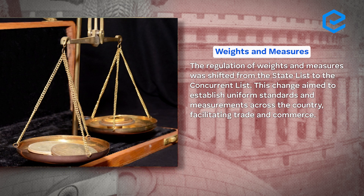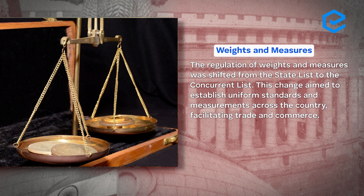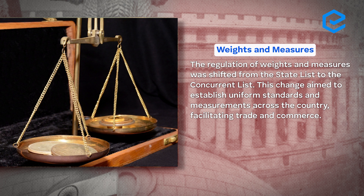Weights and measures: regulation of weights and measures was shifted from the state list to the concurrent list — again uniformity was needed. A useful rule of thumb: if you are confused whether a subject belongs to the state list, concurrent list, or central list — topics requiring uniformity of legislation across the country generally go to the central list or concurrent list. Subjects where states can govern better on their own are generally found in the state list.